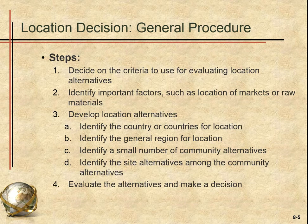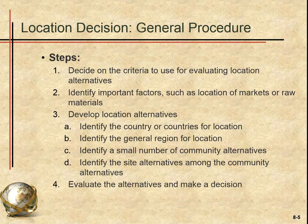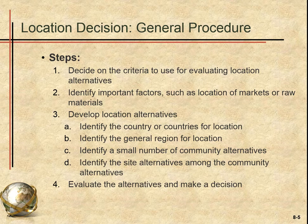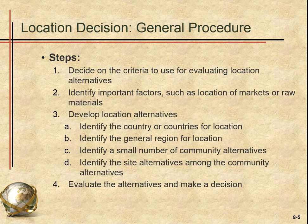A criteria could be, for example, that you need to be near raw materials — say it's a mining operation. On the other end, the criteria could be that you need to be in a location where young people live. If you have a hip clothing store targeting people between 16 and 25, going to a Florida retirement community is obviously not a good location. Then you have to identify the important factors such as location of markets or raw materials — now that you've decided on your criteria, you need to identify the factors that will impact your location decision.